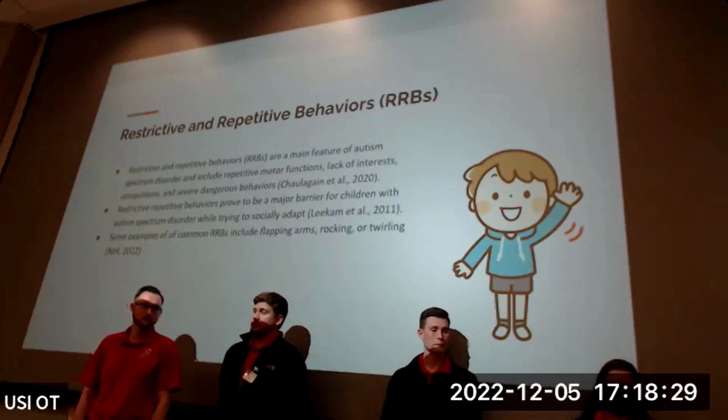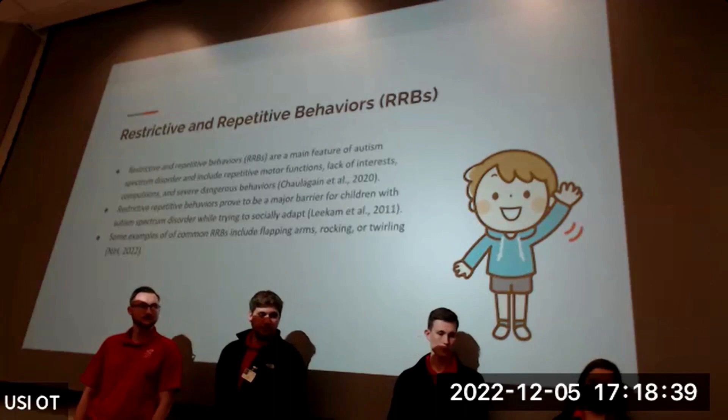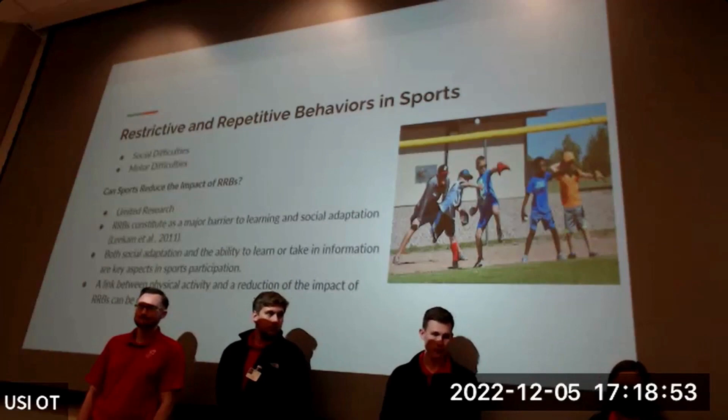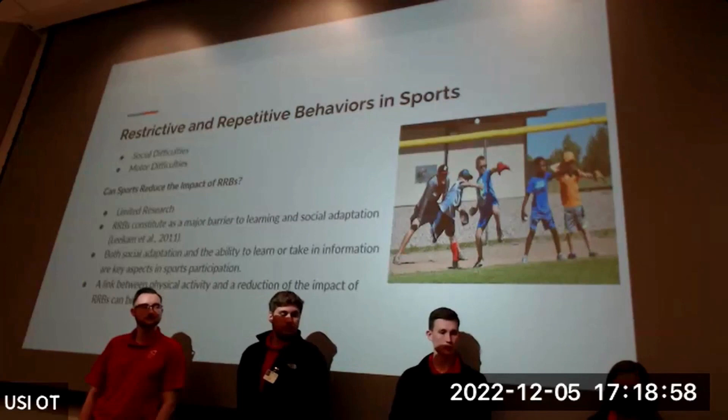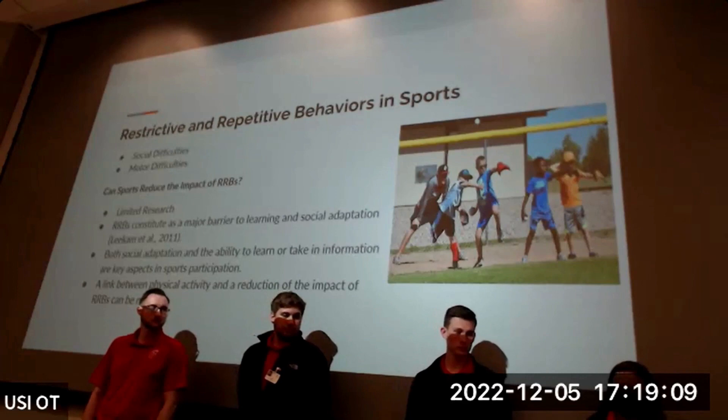Restrictive and repetitive behaviors, or RRBs, are one of the four features of autism spectrum disorder. RRBs include repetitive motor functions, compulsions, or severe and dangerous behaviors that can affect individuals with ASD both physically and mentally, and can lead to struggles in adapting socially, which affects their ability to form relationships in sports. Although there has been limited research specifically proving sports reduce the impact of RRBs, many studies show that physical activity in general can help alleviate some of the severity of RRBs.